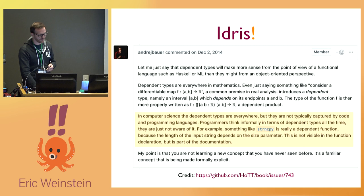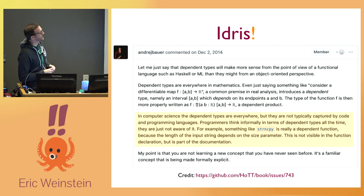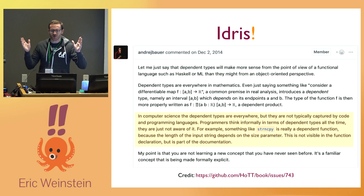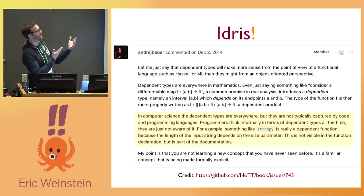I've done some work on Idris, and it's really tough to find a lot of practical examples — people are relatively new to dependent types, and there's not a lot of cool stuff being done with it in production yet. But I found this issue on a book about type theory on GitHub, and the fascinating thing is that we are already doing these things. The highlighted part reads: 'In computer science, dependent types are everywhere, but they are not typically captured by code. Programmers think informally in terms of dependent types all the time — they're just not aware of it.' Something like strcpy is really a dependent function because the length of the input string depends on the size parameter, but it's not visible in the function declaration — it's just part of the docs. If we push something that a programming language could enforce into the docs, it doesn't get done — things catch fire. So I really like putting these things in the language, because then the computer worries about it, not me.